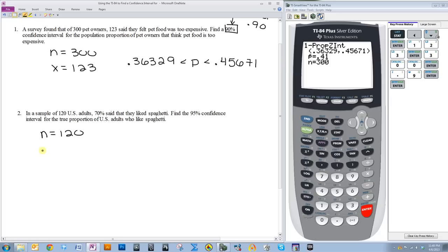So, in this example, this percentage does not represent X. It represents the variable P hat. P hat is always the proportion of the sample that fit within what you're looking for. So, 0.7.